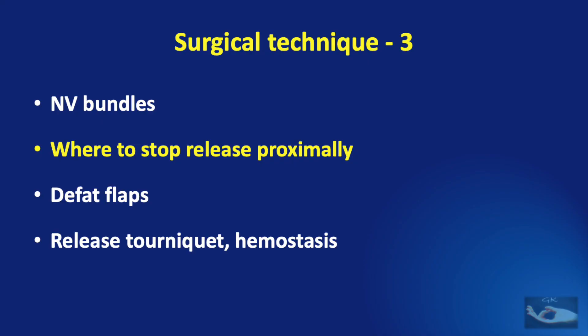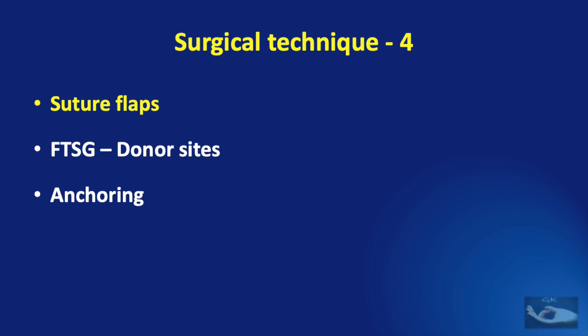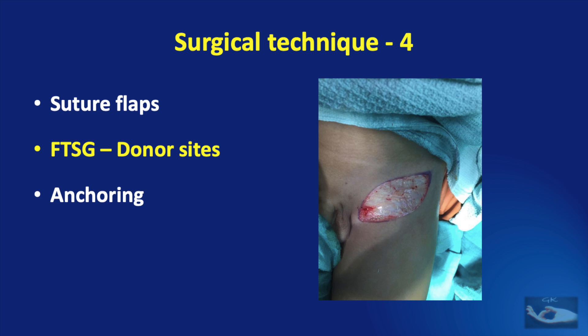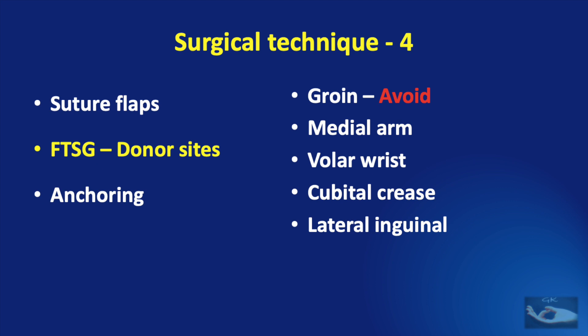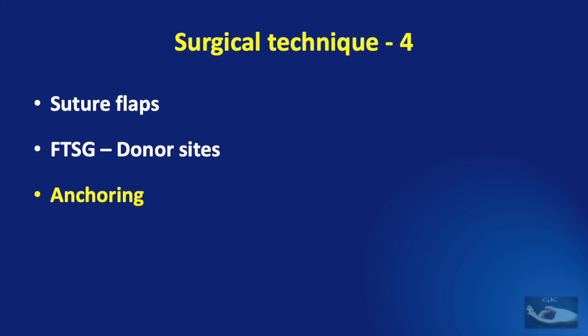Now that the release has been done, all the raised flaps are defatted, taking care to avoid injuring the subdermal venous plexus to prevent vascular embarrassment. The tourniquet is then released and hemostasis secured. Suturing of the flaps is done with fine monocryl sutures — we use 4-0 monocryl. The residual raw areas are resurfaced with full thickness skin grafts. The groin area should be avoided as a donor site due to later hyperpigmentation and embarrassing hair growth when secondary sexual characteristics develop. Alternative donor sites include the medial arm, volar aspect of the wrist, the cubital crease, and the lateral inguinal area near the anterior superior iliac spine. Grafts are anchored with 4-0 monocryl and donor sites closed carefully in layers.